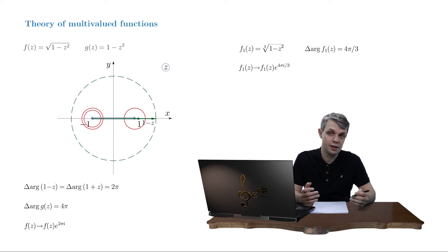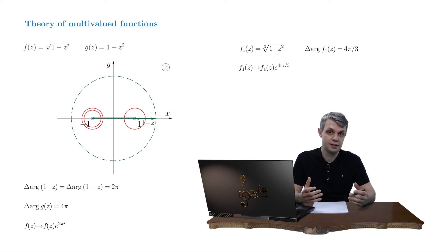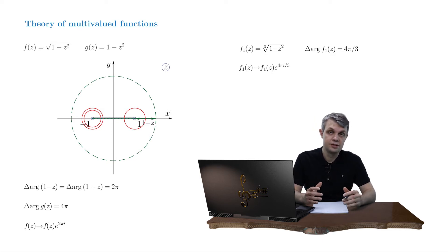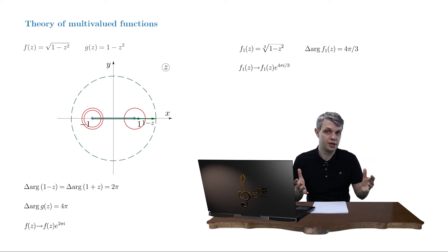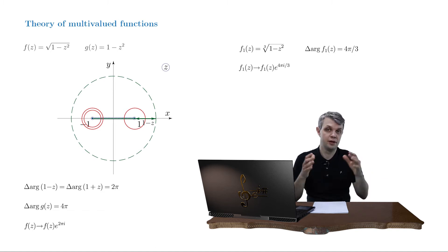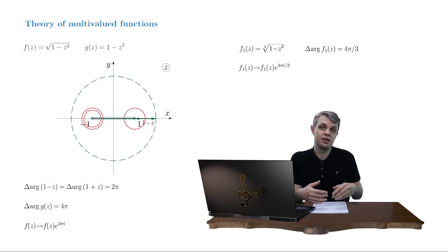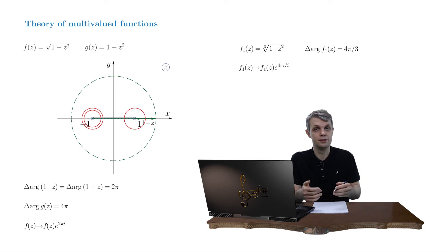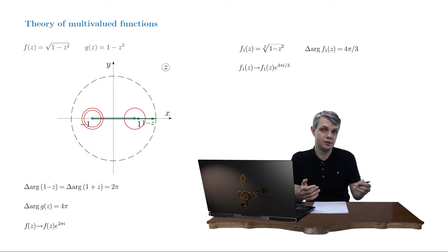There is another way to check if a finite branch cut makes a function single-valued. The idea is to stretch a contour circumventing the branch cut until it becomes a very large one, and then check the behavior of the function along this closed contour — it is enough to find its asymptotics.